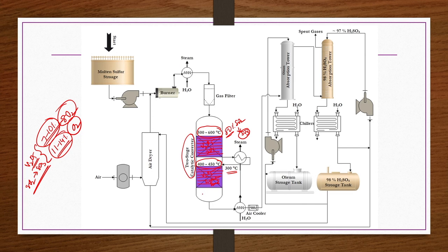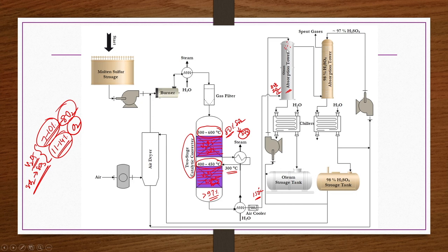By the completion of the second stage reaction, the conversion of SO2 to SO3 reaches 97 to 98 percent. These gases are again at high temperature and are cooled by water and air coolers to approximately 150 degrees centigrade. Then they are sent to an oleum absorption tower where oleum droplets are sprayed from the top to absorb SO3.